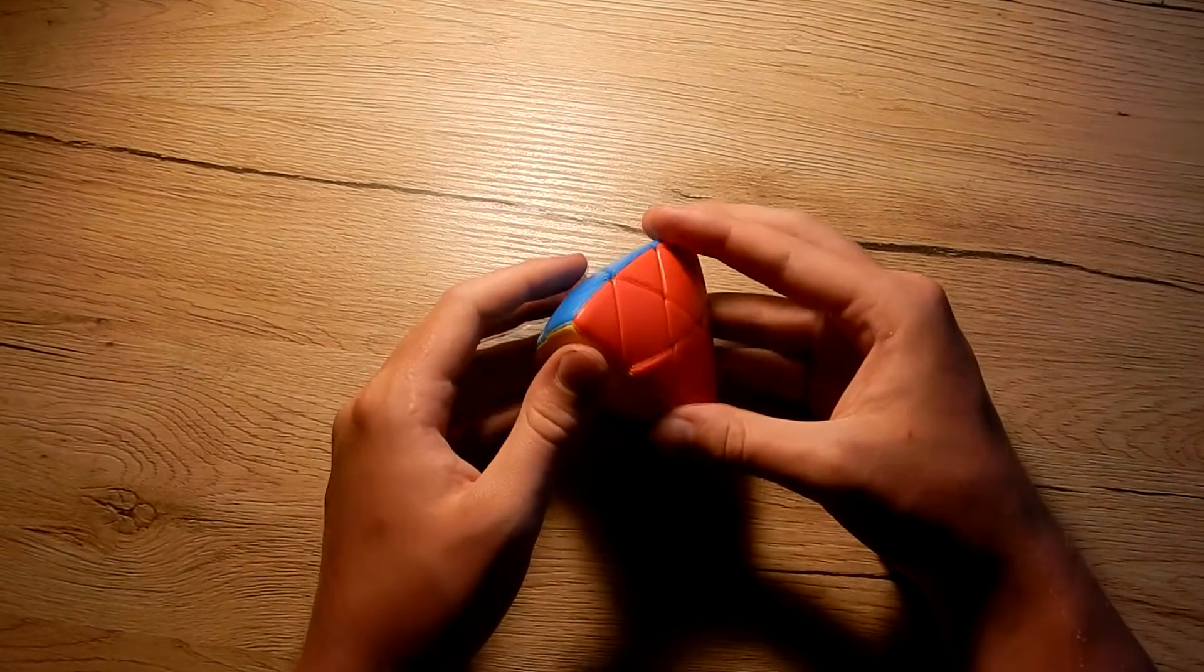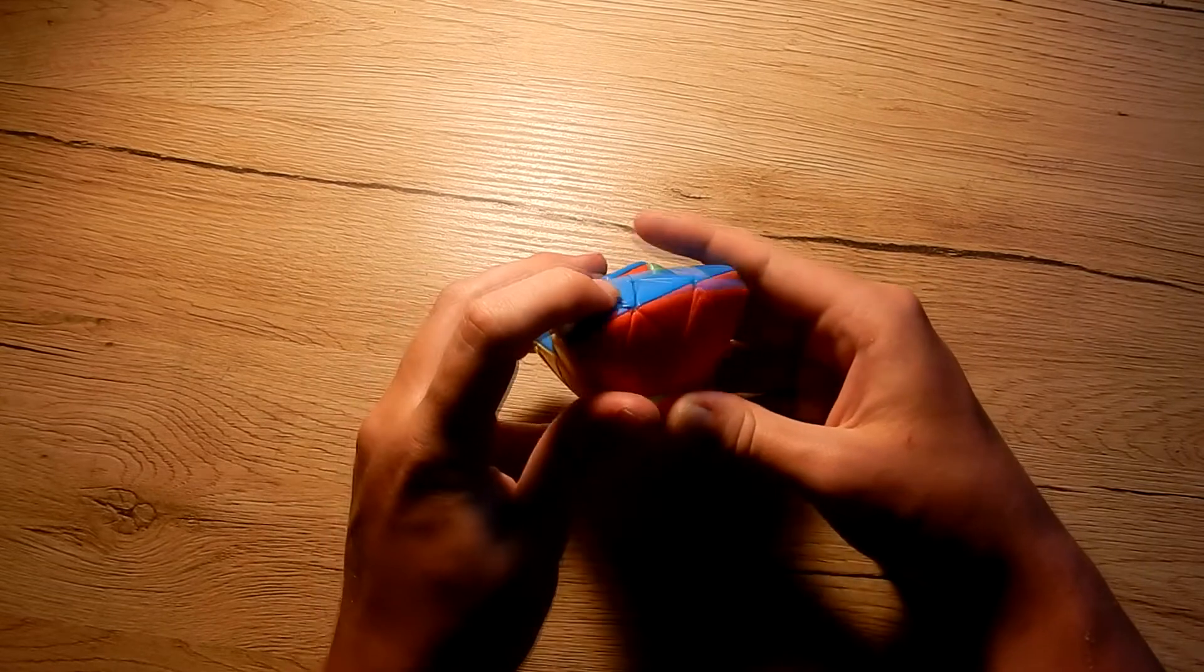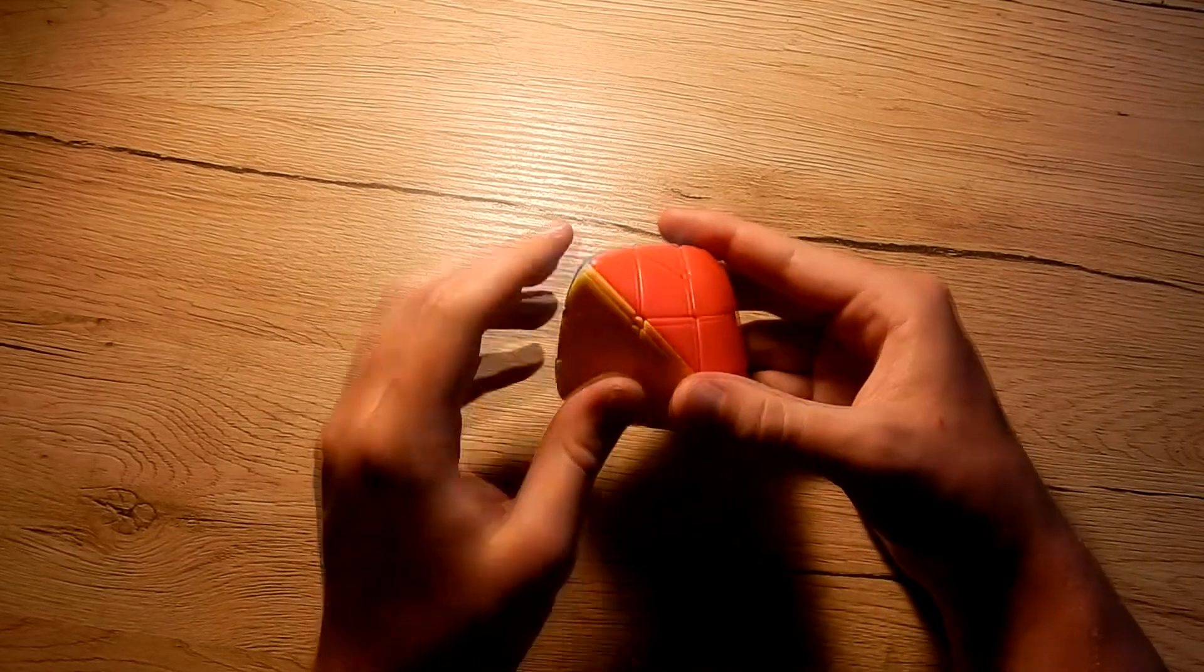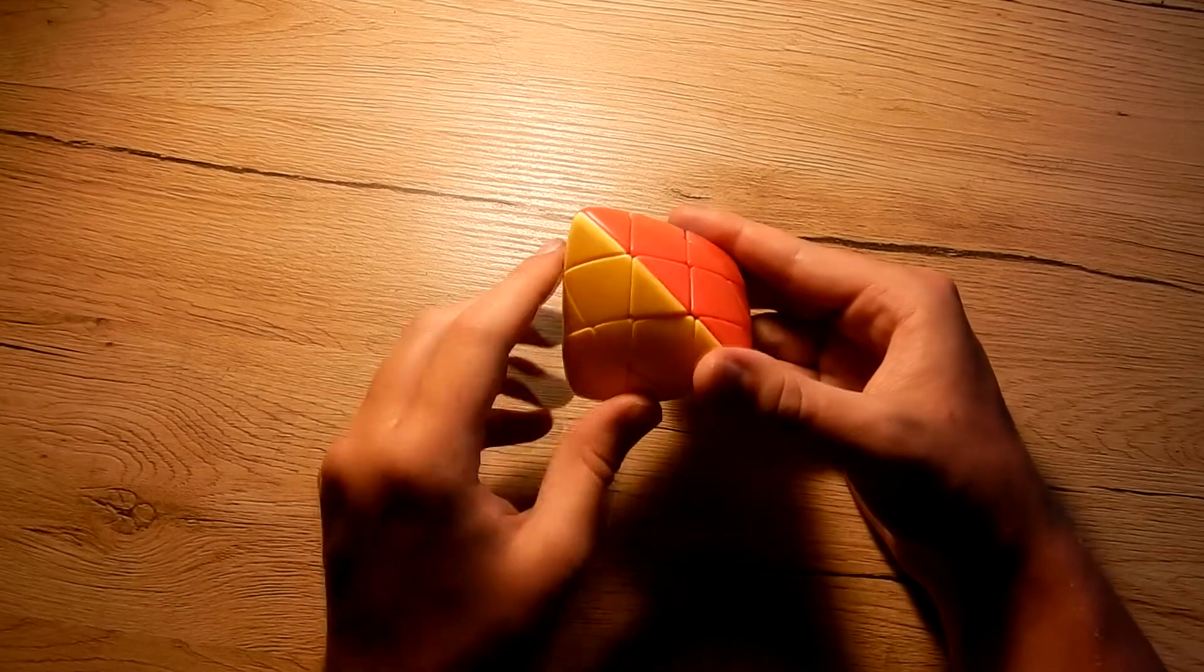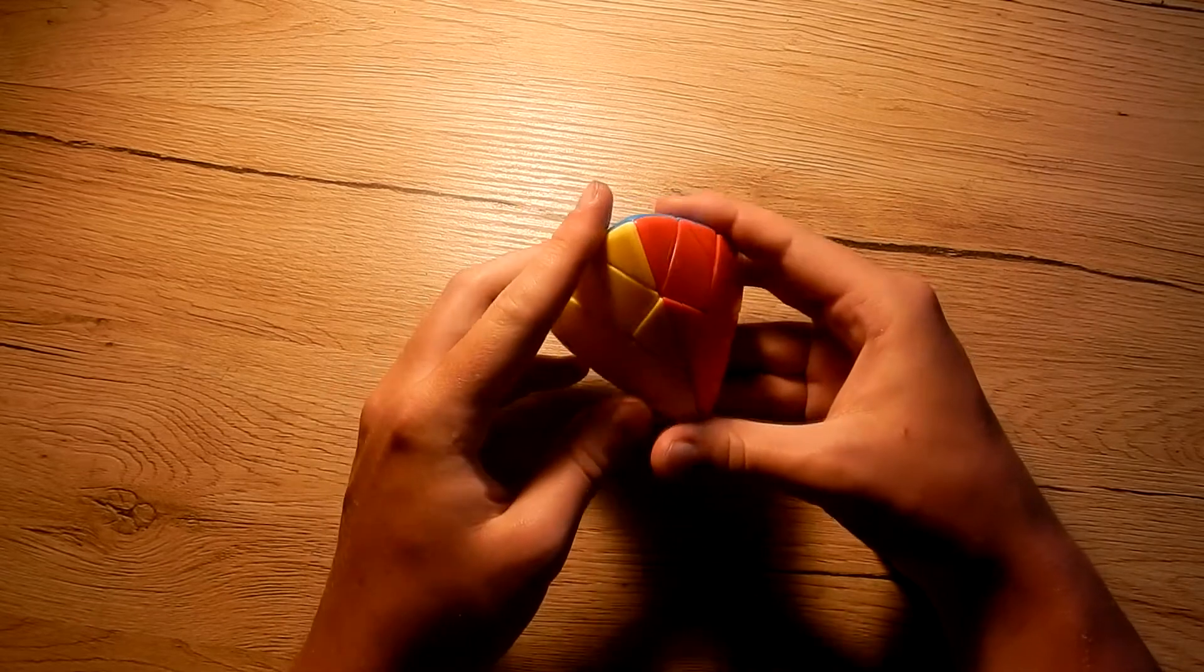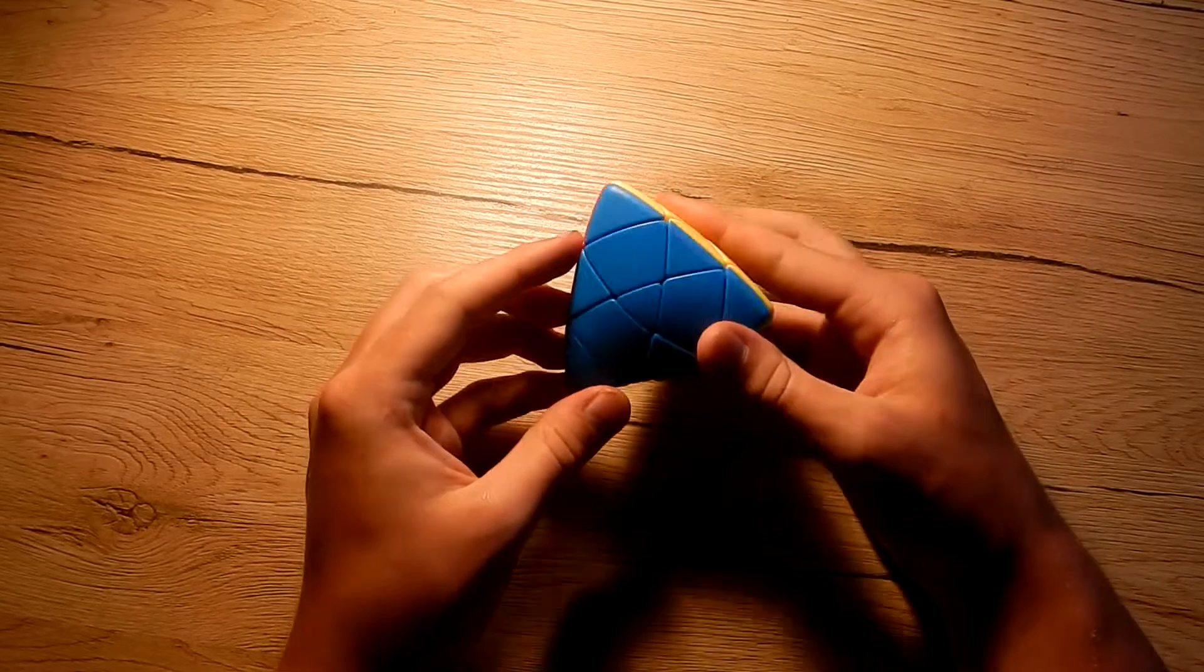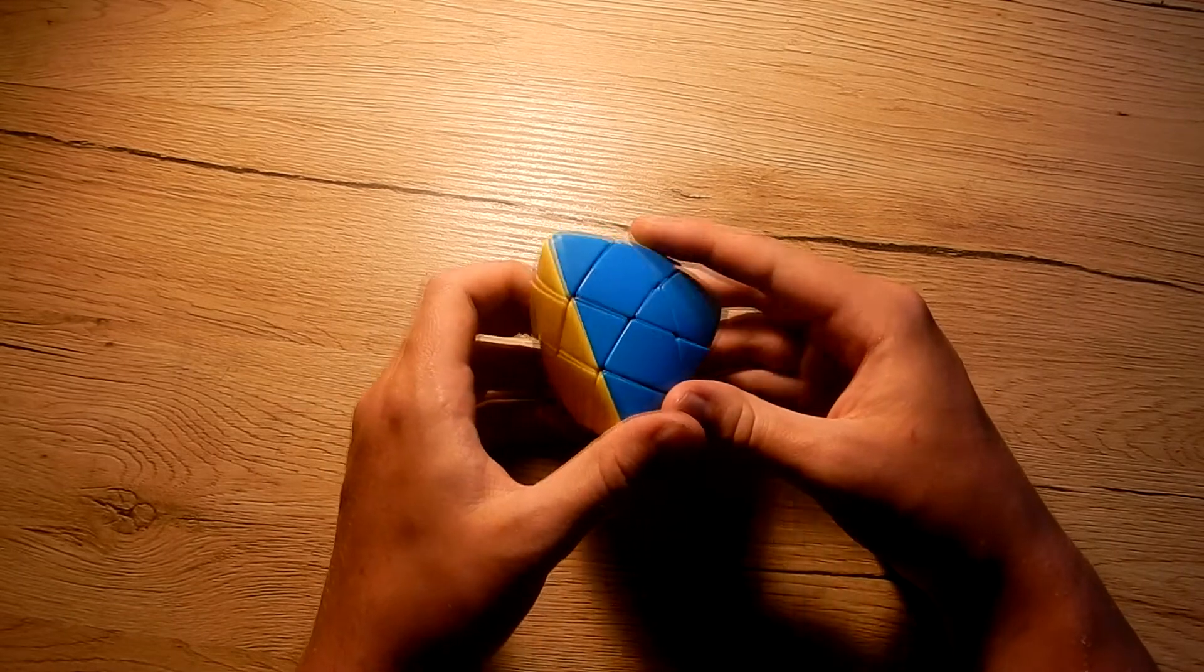Next one we have Master Morphix. I really thought it would be easier, but it is quite a hard puzzle. It is a 3x3, as you can see. Like this it is a 3x3, but it looks more like a Pyraminx if you look at the sides.